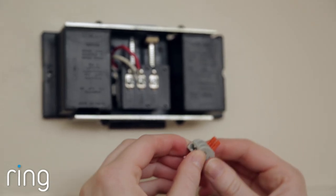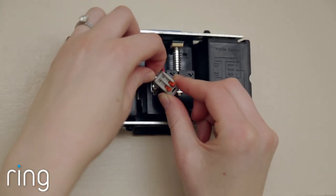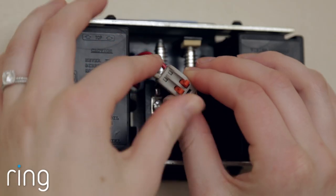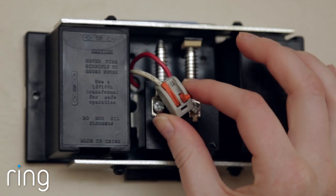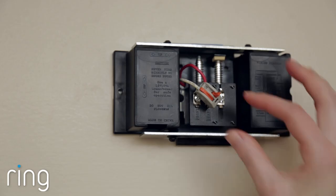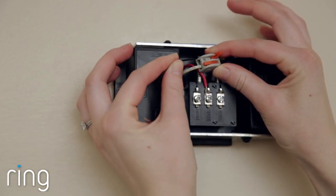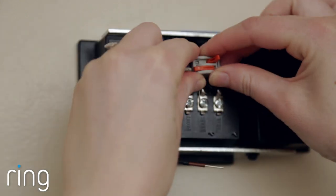Insert the wire you just removed from your doorbell into the open hole in the connector. Then snap the orange lever down to secure the wire in the connector. Then secure the black wire from the Pro Power Kit in the other hole in the connector.